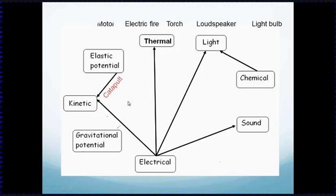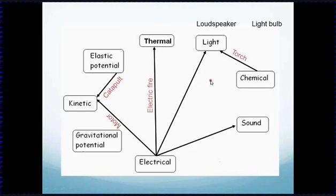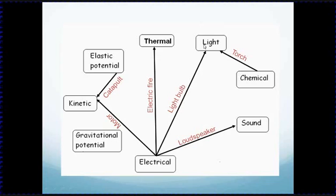An electric motor turns electrical energy into kinetic energy. An electric fire turns electrical energy into thermal or heat energy. A torch might be a catch — you might think it starts from electrical energy, but a torch runs off batteries, so it actually starts with chemical energy in the battery, which is turned into light. A loudspeaker turns electrical energy into sound, and a light bulb turns electrical energy into light. But hopefully you're thinking: a light bulb doesn't just turn electrical energy to light — some of the energy is wasted as heat. The next thing to consider is what happens to the rest of the energy when a device doesn't just do the one job it's supposed to.